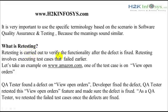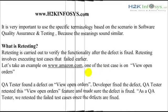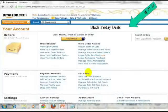What is retesting? Retesting is carried out to verify the functionality after the defect is fixed. Retesting involves executing the test cases that failed earlier. For example, on Amazon.com, let's assume we find a defect on 'View Open Orders.'